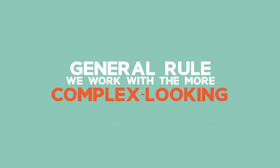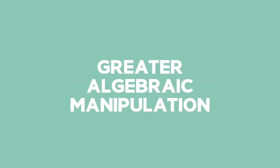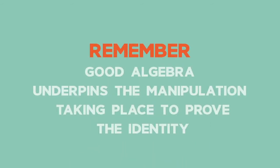As a general rule, and as strange as it may seem, we work with the more complex looking of the two sides, which is normally the side that requires greater algebraic manipulation. Remember that good algebra underpins the manipulation taking place to prove the identity.